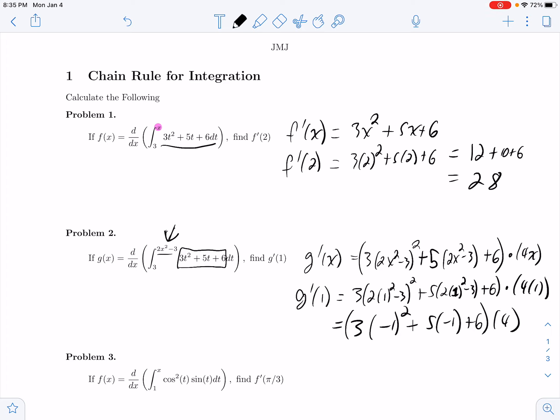Which is what, 3 minus 5 plus 6, so that's what, 3 plus 1, so that's 4. 4 times 4 is 16 if I did the arithmetic correctly.